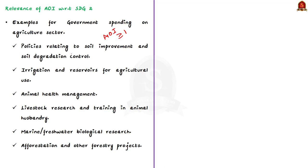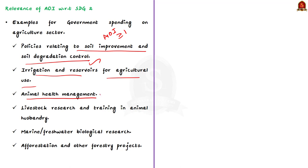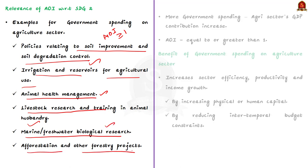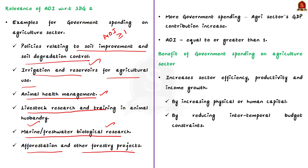Examples of government spending on agriculture include policies related to soil improvement and soil degradation control, irrigation and reservoir for agriculture use, animal health management, livestock research and training in animal husbandry, marine and freshwater biological research, afforestation and other forestry projects, etc.